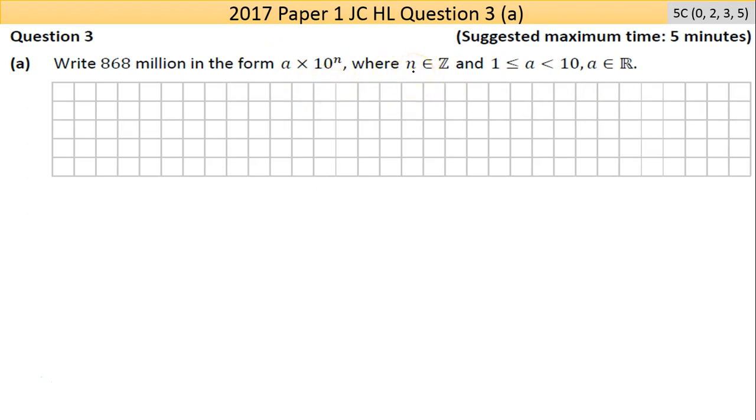They want n, the power, to be an integer—a positive or negative whole number. And your a value should be between 1 and 10. So a is an element of ℝ, a real number, that can be any number basically.